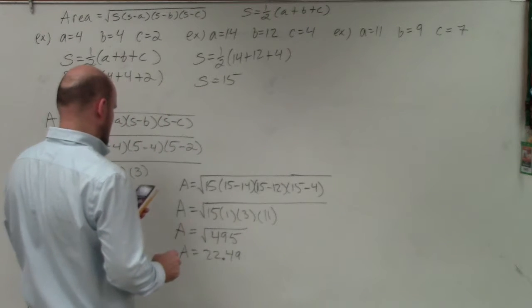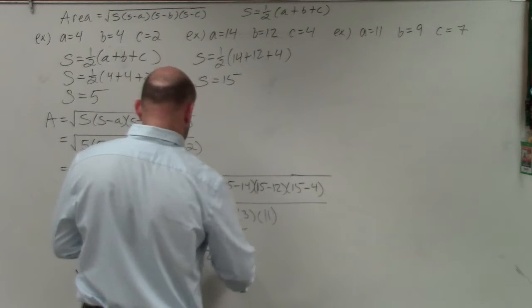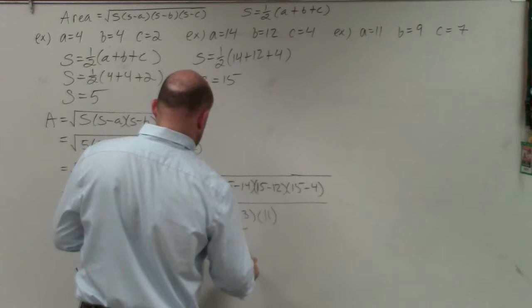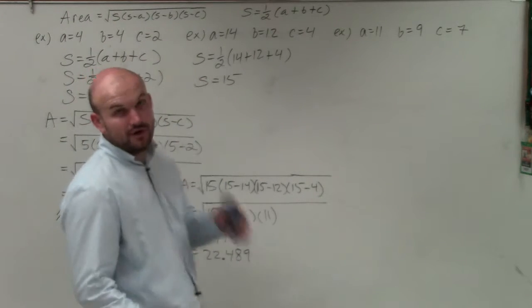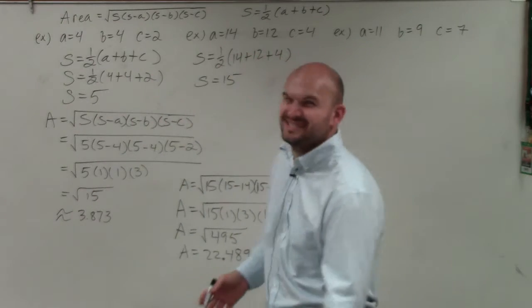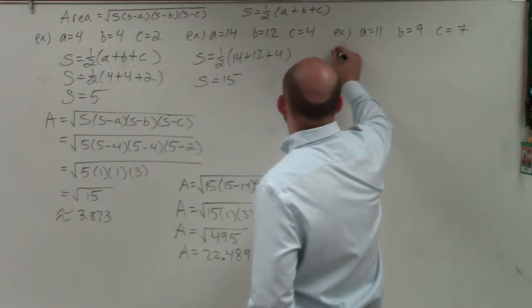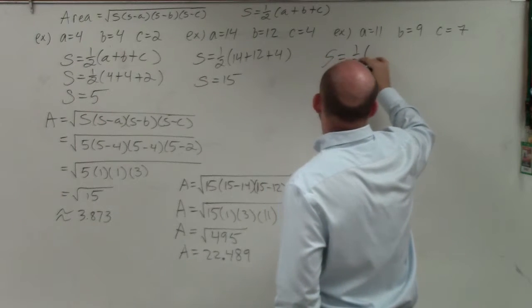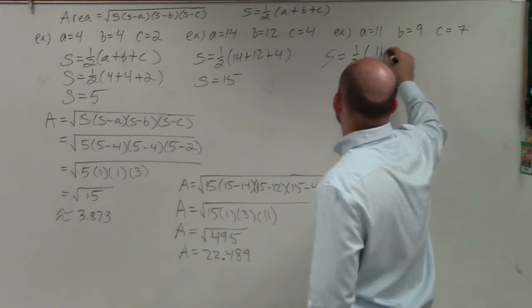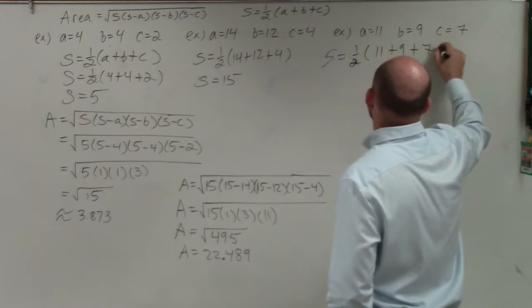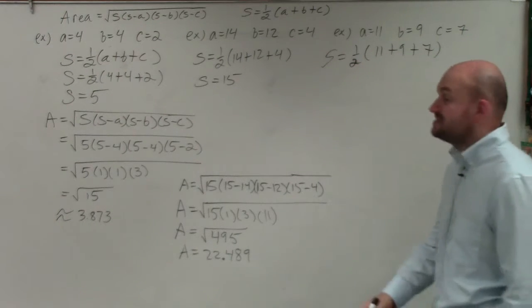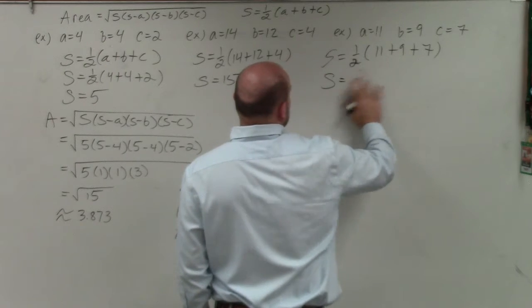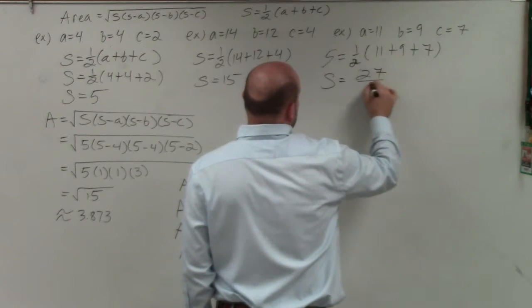I'm sorry, yes, 489. Okay? All right, let's go ahead and do our last example. I hope you see it's pretty straightforward. All we want to do is identify our s, so s equals 1 half times 11 plus 9 plus 7. 11 plus 9 is 20, plus 7 is 27. So s equals 27 times 1 half is 27 over 2.